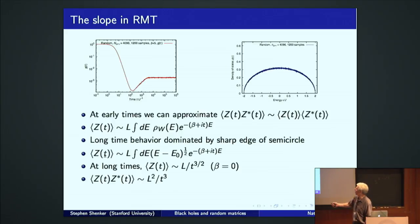All right? And there's L because you have L eigenvalues. So ZZ star is the square of that. It goes like L squared over T cubed. This is a log plot. The straight line is accurately T cubed. So what this slope is, is it tells you something about the low energy edge of the spectrum, its coarse grain shape. It's nothing to do with the fine structure. It's the coarse grain shape.